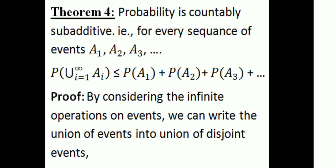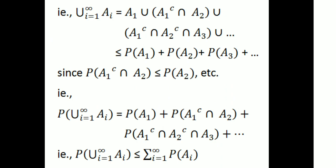Theorem 4: Probability is countably sub-additive. That is, for every sequence of events A₁, A₂, ..., P(∪ᵢ₌₁^∞ Aᵢ) ≤ P(A₁) + P(A₂) + ... This is a countably infinite sequence of events, but the probability of their union is less than or equal to the sum of individual probabilities. Proof: By considering infinite operations on events, we can write the union of events as a union of disjoint events. That is, ∪ᵢ₌₁^∞ Aᵢ = A₁ ∪ (A₁ᶜ ∩ A₂) ∪ ...